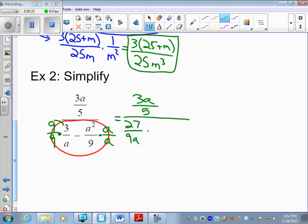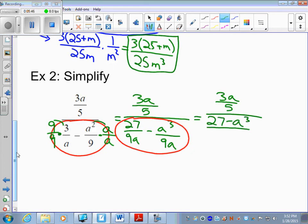Minus a times a squared is a to the third over 9a. We have like denominators. Now I can combine those like denominators. Again, I'm only looking at the denominator. The numerator's still staying the same, 3a. The denominator, we have 27 minus a to the third over 9a. Now I have two fractions.